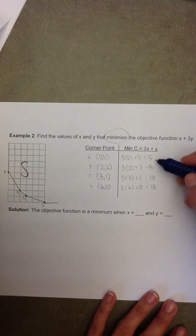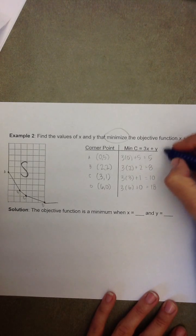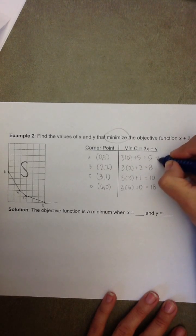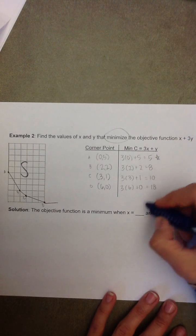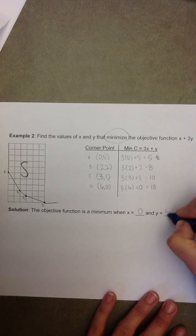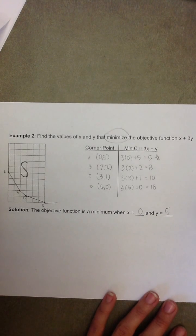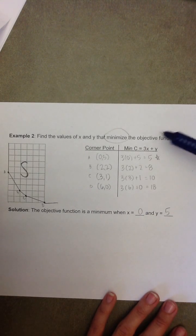So, we can see here, of all four of these objective function values that we received, the minimum value of the objective function is 5. That occurs at the corner point 0, 5. So, when x equals 0 and y equals 5, the objective function is minimized.